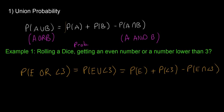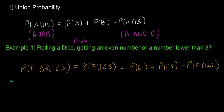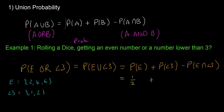Even numbers when rolling a dice are 2, 4, and 6. Numbers less than three are 1 and 2. If you just added the probabilities of each of these you'd be counting 2 twice — and that's the whole point of the formula; the minus sign stops you from counting 2 twice. The probability of picking an even number is 1/2, plus the probability of picking a number lower than three is 2/6, minus the probability of even and lower than three, which is 1/6 because the only number they have in common is 2.